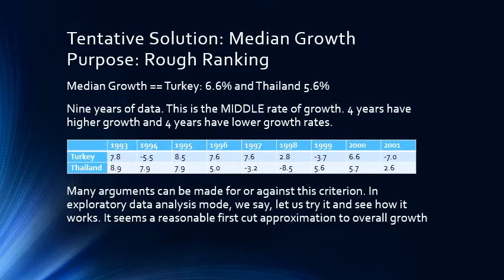We propose a very simple solution: let's just take the median growth. In the example given, there are nine years of data with many different growth rates for Turkey. The middle growth rate is 6.6% — four years Turkey had higher than that and four years it had below that. So we take 6.6% as the median growth rate for Turkey. Similarly, for Thailand over all nine years, 5.6% comes out in the middle. This is a very simple way to combine about 60 years of growth rates into one number, and that number can then be used to evaluate the countries. We are doing what is called exploratory data analysis — let's just try it and see what happens.